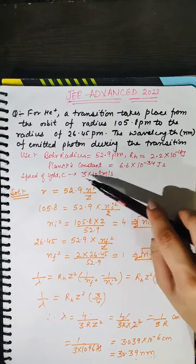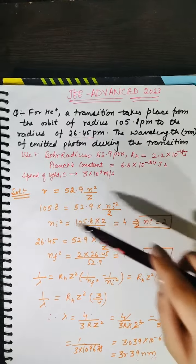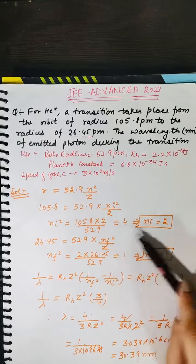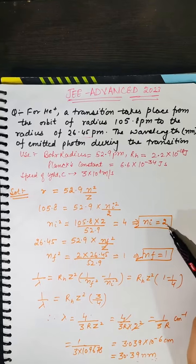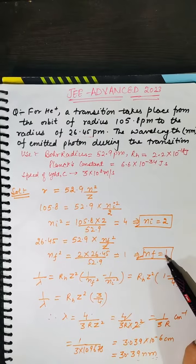We know that the radius equals 52.9 into n square by z, in picometers. So we will put the radius values here. We know that z, for helium, will be 2. Here you have n_i, that is the transition state initial has value 2, and the second value put here is n_f equals 1.